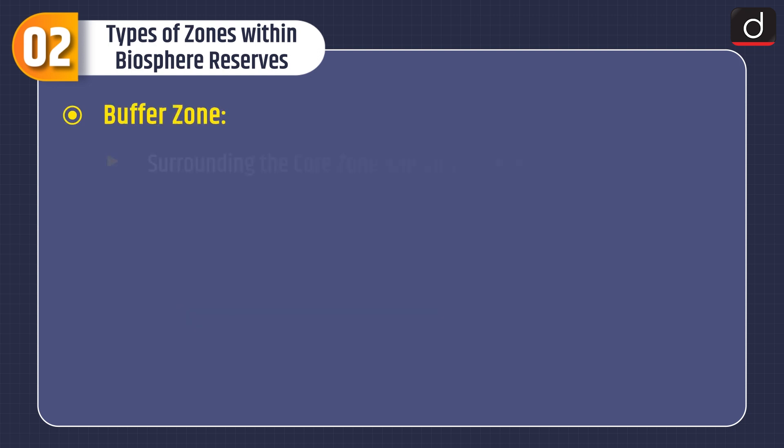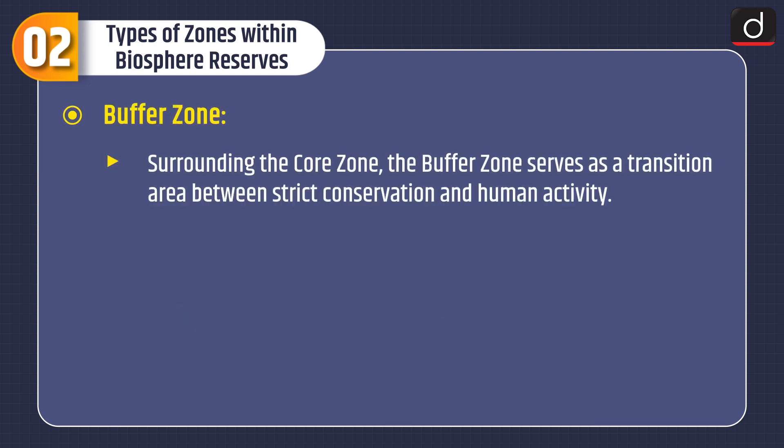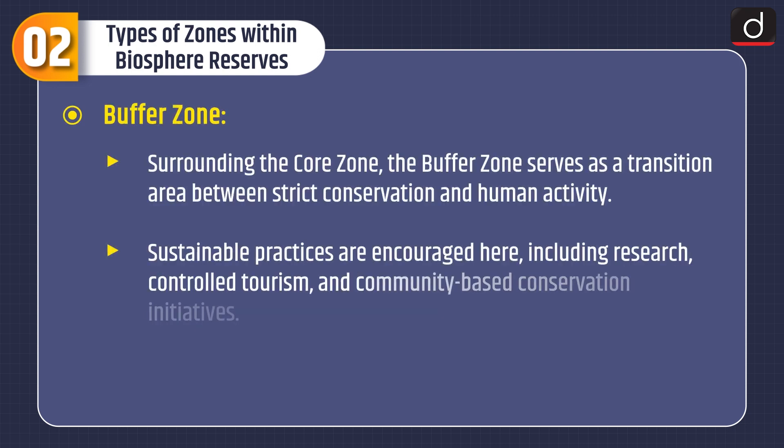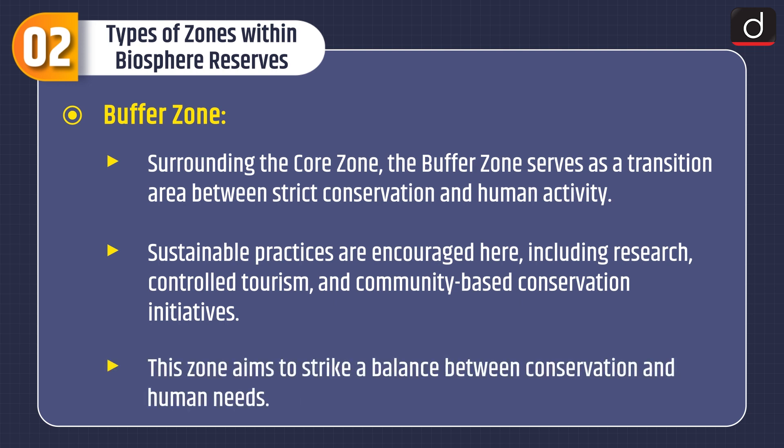The second is the Buffer Zone. Surrounding the core zone, the buffer zone serves as a transition area between strict conservation and human activity. Sustainable practices are encouraged here, including research, controlled tourism, and community-based conservation initiatives. This zone aims to strike a balance between conservation and human needs.